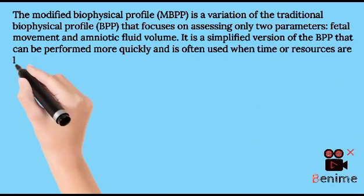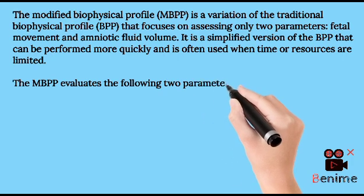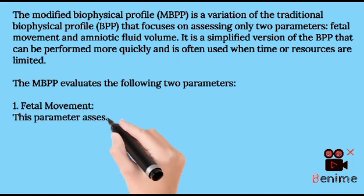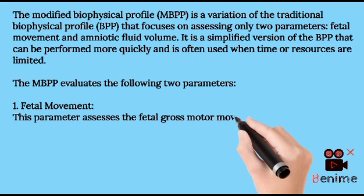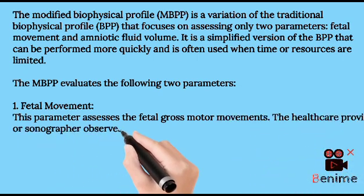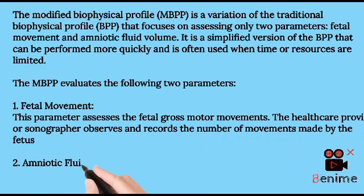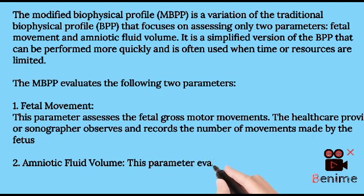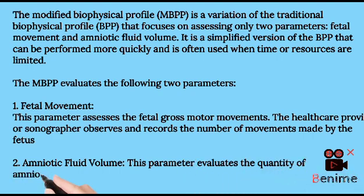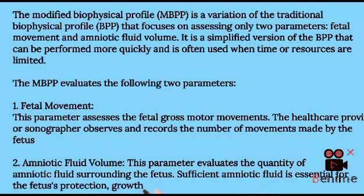The MBPP evaluates the following two parameters. 1. Fetal Movement: This parameter assesses the fetal gross motor movements. The healthcare provider or sonographer observes and records the number of movements made by the fetus within a specific time frame. Adequate fetal movement indicates a healthy nervous system and well-being. 2. Amniotic Fluid Volume: This parameter evaluates the quantity of amniotic fluid surrounding the fetus. Sufficient amniotic fluid is essential for the fetus's protection, growth, and proper functioning of various systems.